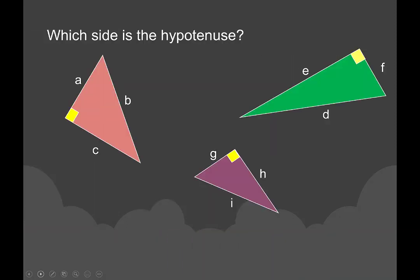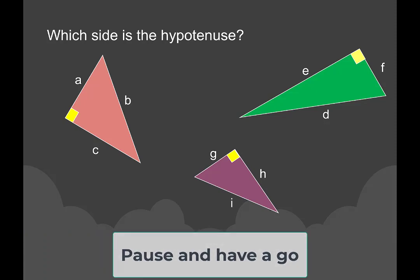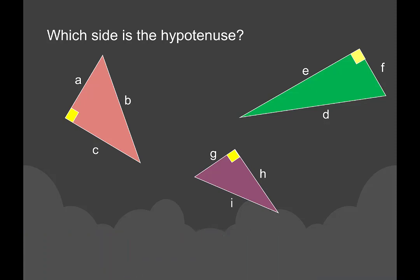Can you identify the hypotenuse of these three right-angled triangles? I hope you managed to identify the hypotenuse. So, the first one — the hypotenuse is side B because it is opposite the right angle. For the green triangle, it is opposite the right angle, which is D. And for the purple one, it is I. So these are the hypotenuses of these three right-angled triangles.